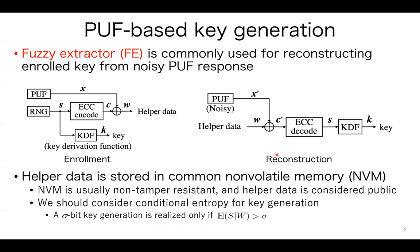PUF response usually includes noise for repeated observations. PUF noise leads to inconsistency between enrolled and reconstructed cryptographic keys, which potentially compromises the security and reliability of PUF-based key generation systems. Therefore, fuzzy extractor FE is commonly used in PUF-based key generation to tolerate PUF noise by error-correcting code, ECC.